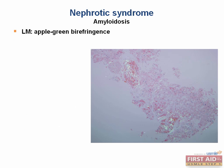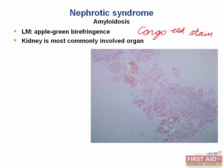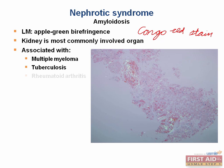Next on the list is amyloidosis. This is a systemic disease process and the kidneys are the most commonly involved organ. The classic stain used to pick up amyloid on light microscopy is the Congo red stain, and amyloid will appear as apple green birefringence on imaging. These are two very high-yield terms always associated with amyloid deposition. It's associated with chronic conditions such as multiple myeloma, tuberculosis, and rheumatoid arthritis.